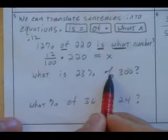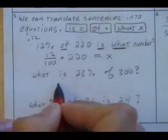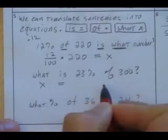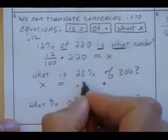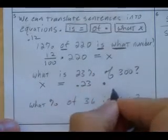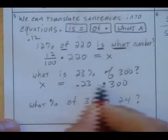Here's another one. What is 23% of 300? So my is, my what, my of is multiplication. 23% is 23 per 100 of 300. So .23 times that.